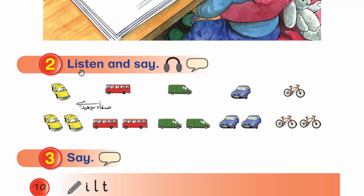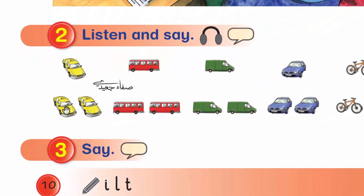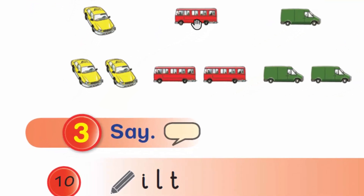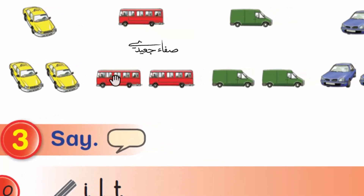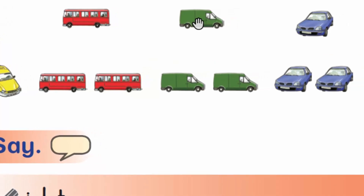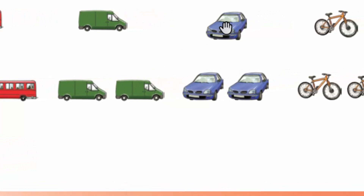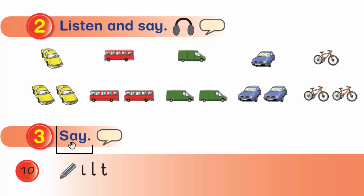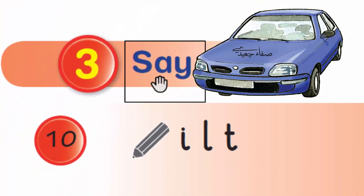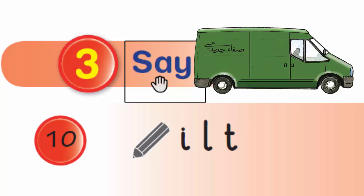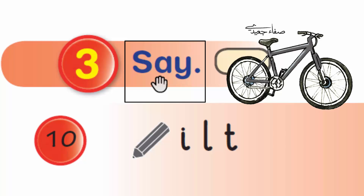Activity 2: Listen and say. One taxi, two taxis. One bus, two buses. One van, two vans. One car, two cars. One bike, two bikes. One car, two taxis, one van, one bike, two buses.